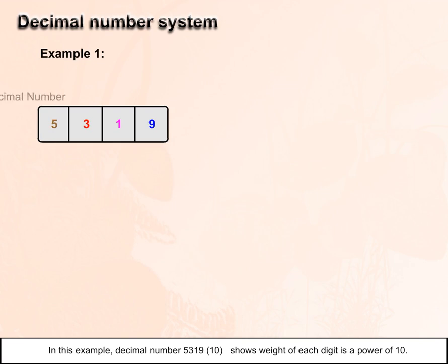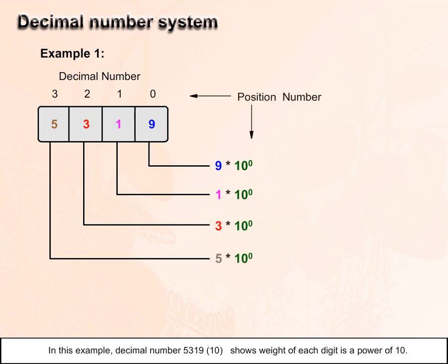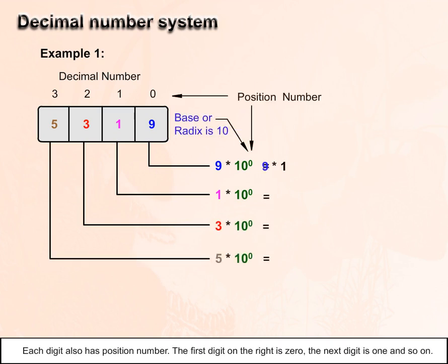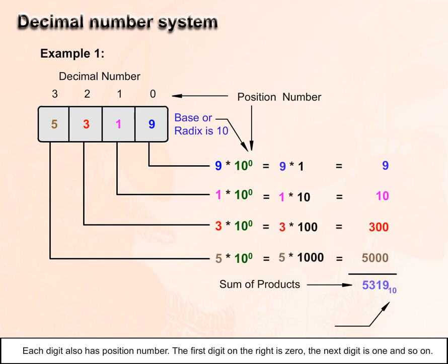Example 1: In this example, decimal number 5319 base 10 shows the weight of each digit is a power of 10. Each digit also has a position number. The first digit on the right is zero, the next digit is one, and so on.